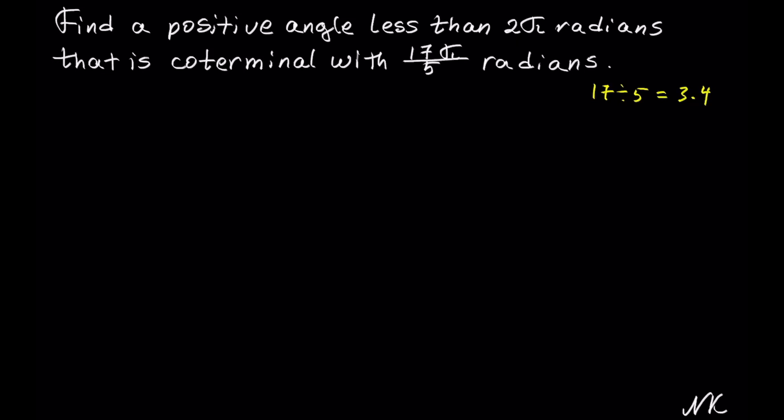When it comes to coterminal angles we can always add or subtract 2π from the given angle. So let's take 17π/5 and subtract one revolution, one circle which is equal to 2π. This will reduce our angle by one rotation.